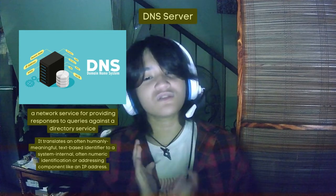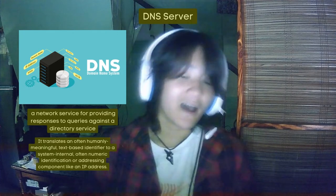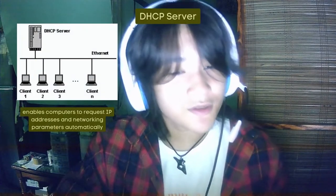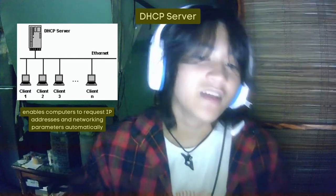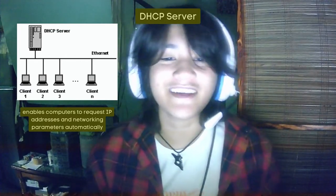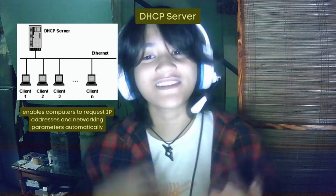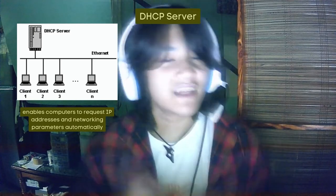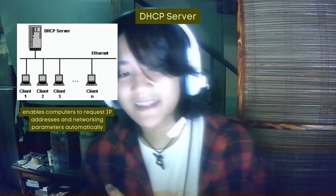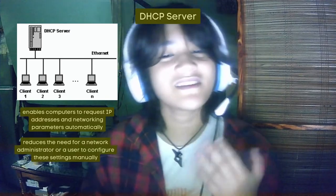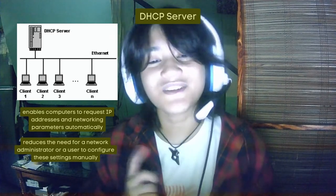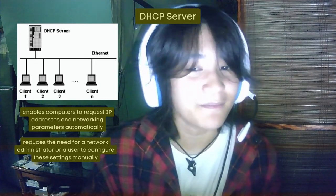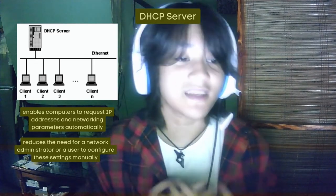The DNS server often uses numeric identification or addressing components such as IP addresses. Next is the DHCP server, which allows computers to request IP addresses and networking parameters automatically, reducing the need for a network administrator or user to manually configure these settings.